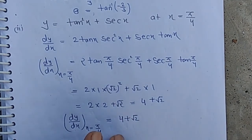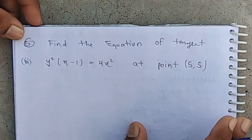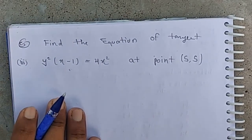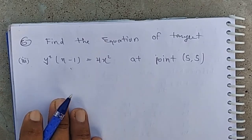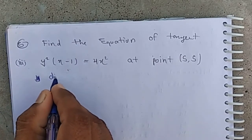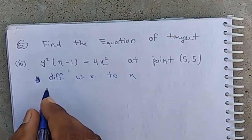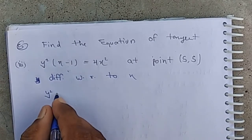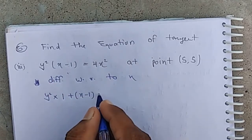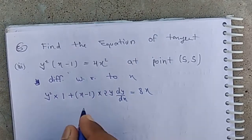To find the inclination, we set dy/dx = tan θ and find θ. Now the third question: find the equation of the tangent to y²(x−1) = 4x² at the point (5, 5). Differentiating using the product rule: y²·1 + (x−1)·2y·(dy/dx) = 8x.